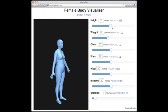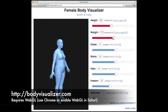If you are interested in exploring the shape model, you can do so online at bodyvisualizer.com. Note that this application requires WebGL to run, which is supported in Chrome and can be enabled in Safari. The online model also does not support pose variation.